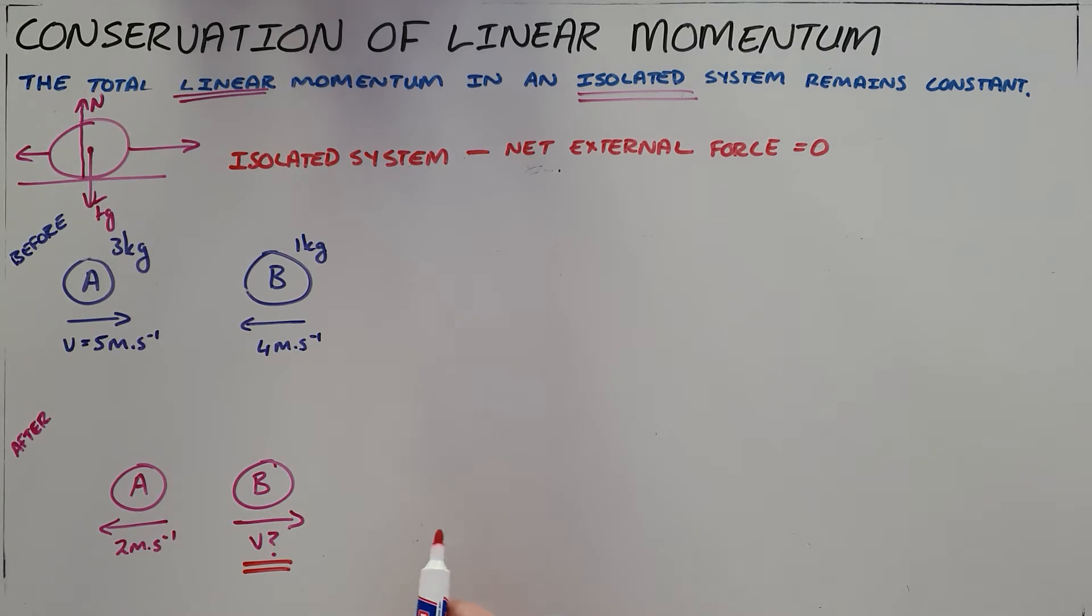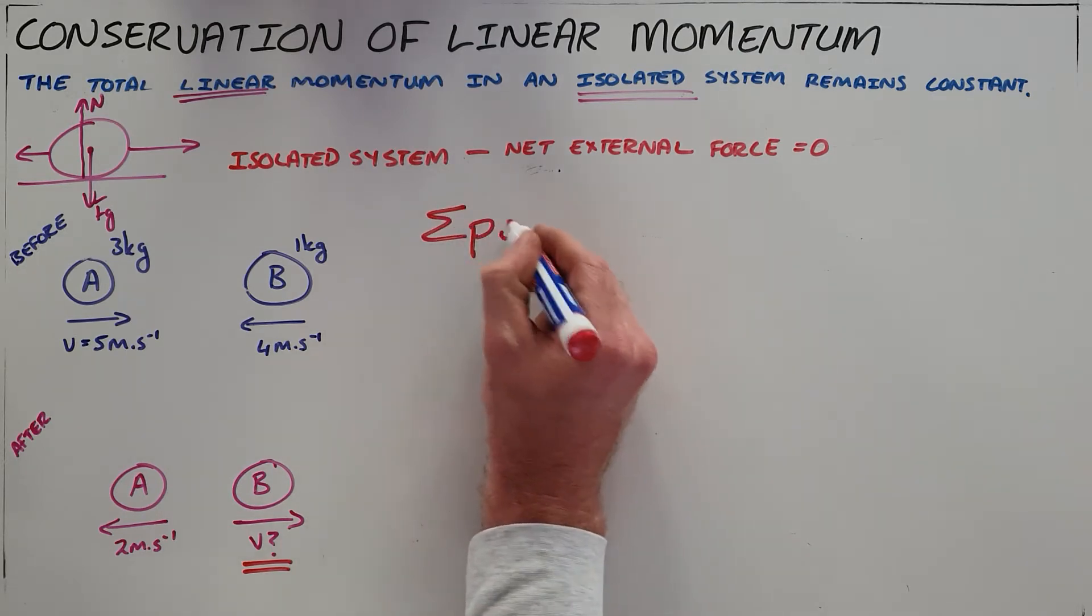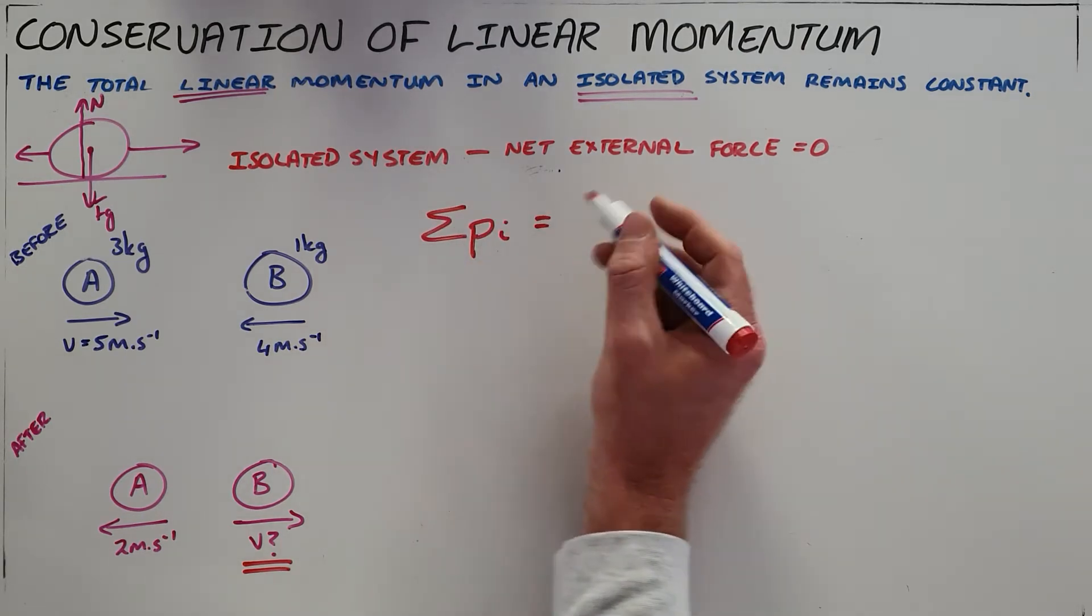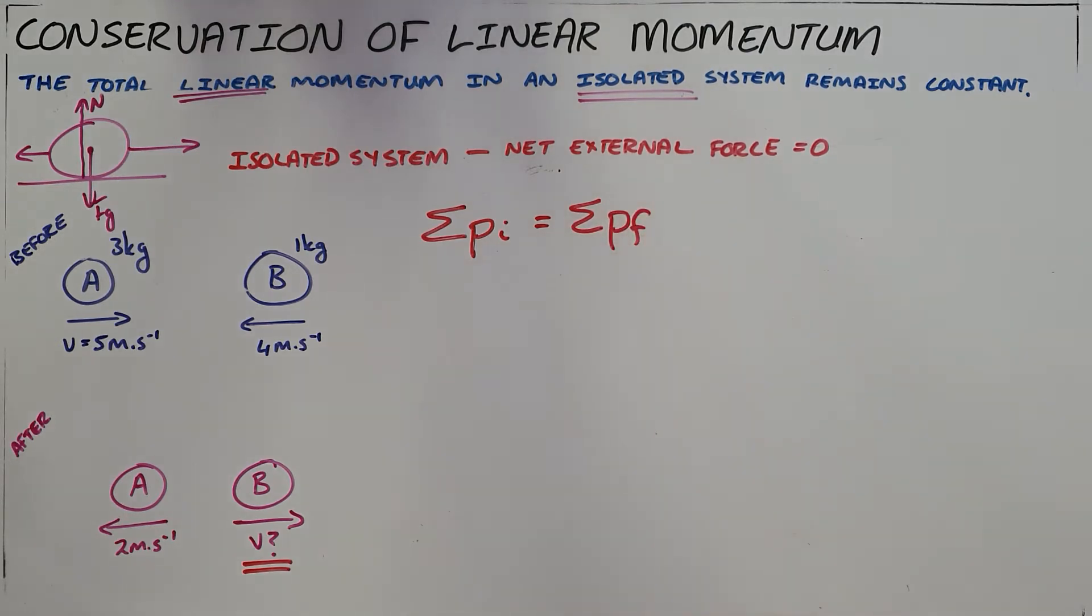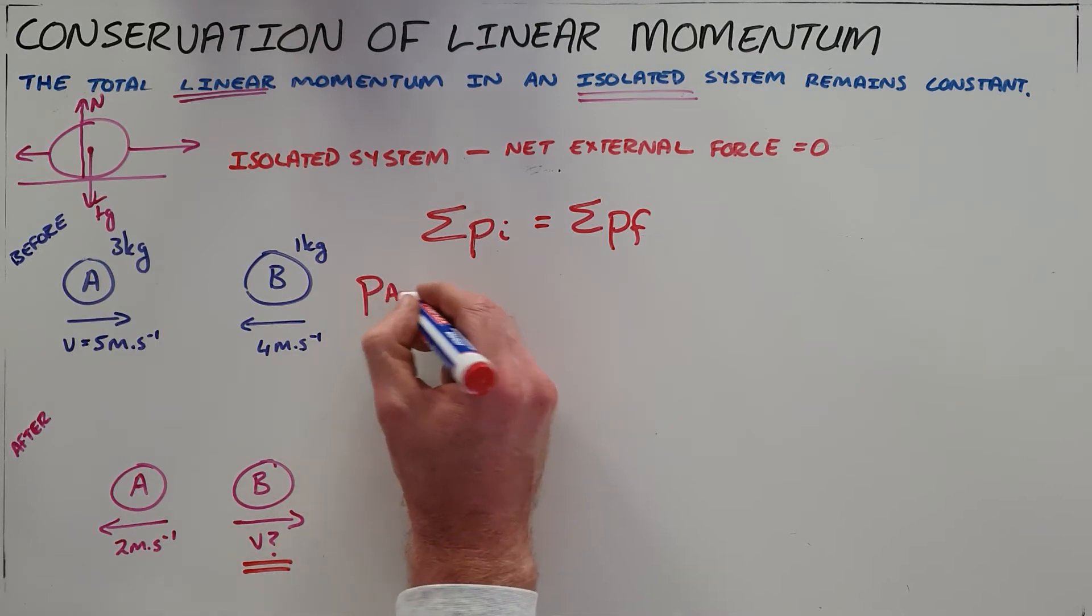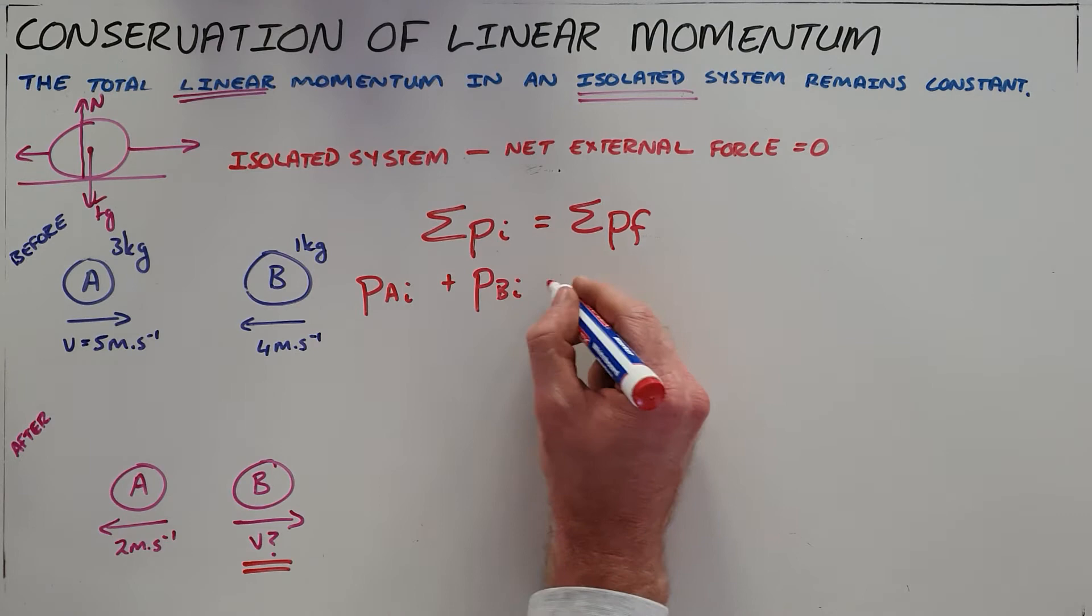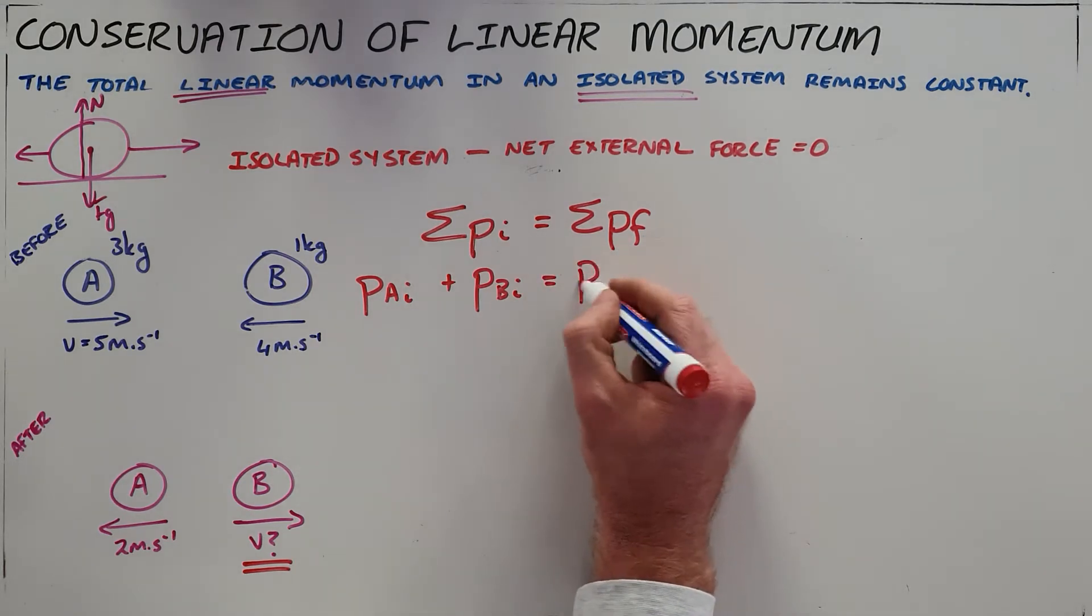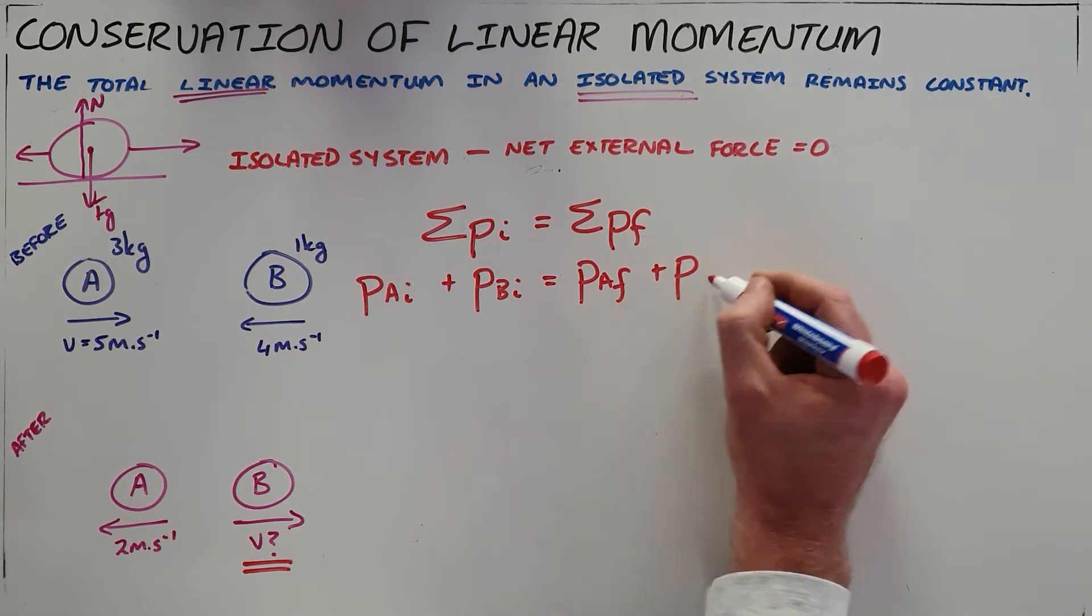Since this is an isolated system, we can say that the momentum is conserved, which means that the total initial momentum in the system must be equal to the total final momentum in the system. This means that the initial momentum of A combined with the initial momentum of B must be equal to the final momentum of A plus the final momentum of B.